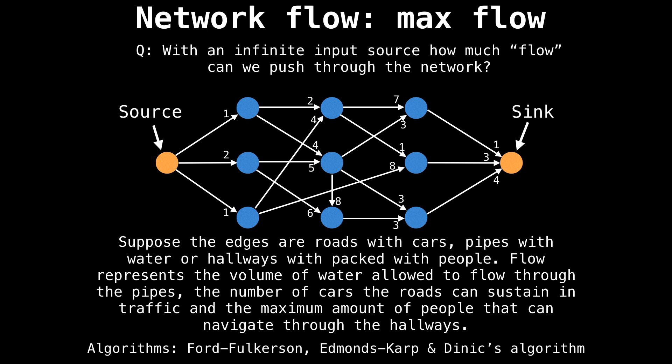The maximum flow would then represent things like the volume of water allowed to flow through the network of pipes, the number of cars the roads can sustain in traffic, or the maximum amount of boats allowed on the river.